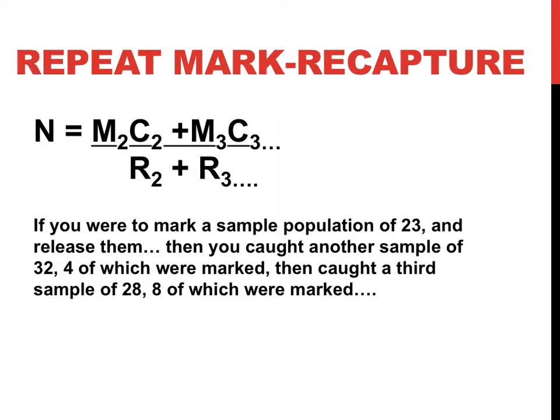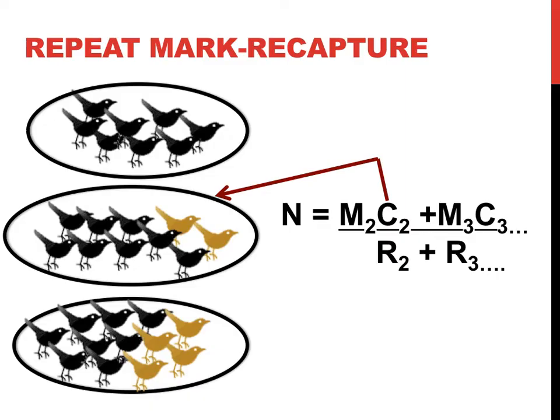If you wanted to more accurately estimate the population using the mark-recapture technique, you could conduct many additional captures and marks beyond the first one, and use a slightly more complex formula that is shown on the top of this slide, which is referred to as the repeat mark-recapture technique. For the formula, N still represents the estimated population size, M represents the number of individuals that were marked in a sample, C represents the individuals that were captured, and R represents the number that were recaptured.